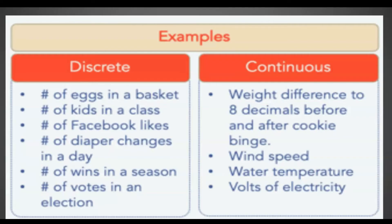Let's look at examples of discrete random variables. Number of eggs in a basket — you can count the number of eggs in a basket, therefore it is discrete. Number of kids in a class — you can count it, therefore it is discrete. Number of Facebook likes — you can count it, so it is discrete. Number of diaper changes in a day — you can also count it, therefore it is a discrete random variable.